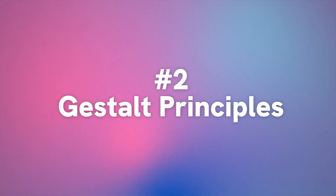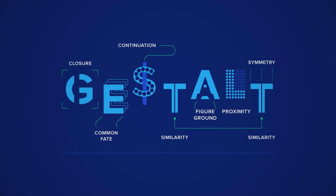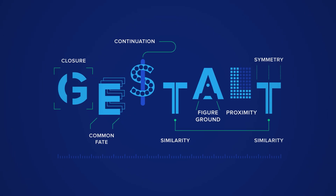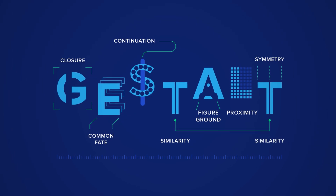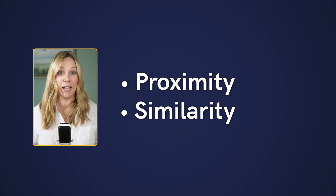Did you know that there are psychological principles that describe how the human eye perceives visual elements? These principles are known as gestalt principles, and they can be used to make our information sharing far more effective when used properly. There are seven principles in total, but two are the most important when we're talking about designing infographics — and those are proximity and similarity.